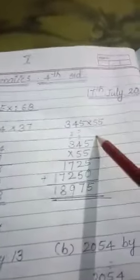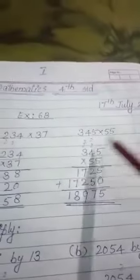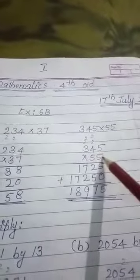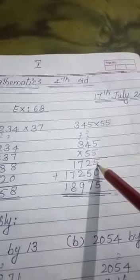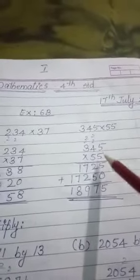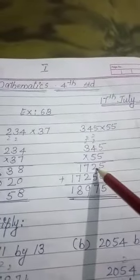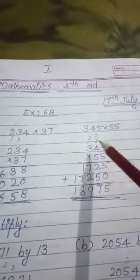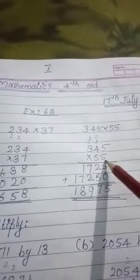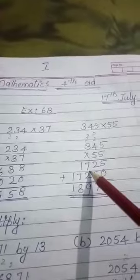Next question given here is 345 multiplied by 55. When you multiply 345 with 5: 5 times 5 is 25, write only 5 here and carry 2. 5 times 4 is 20 plus 2 equals 22, write 2 only and carry 2. 5 times 3 is 15 plus 2 equals 17.